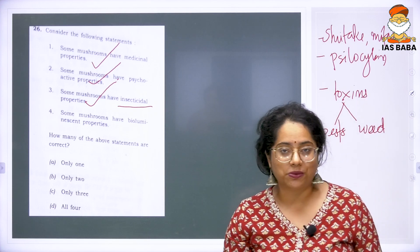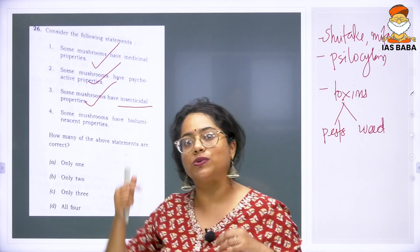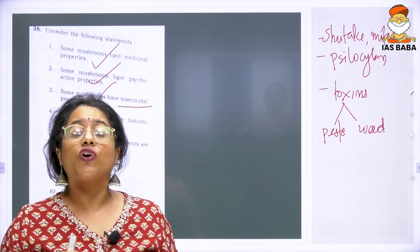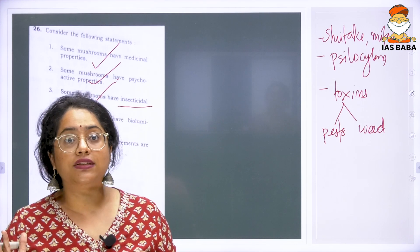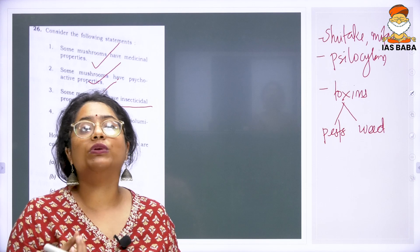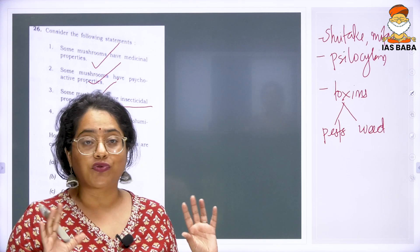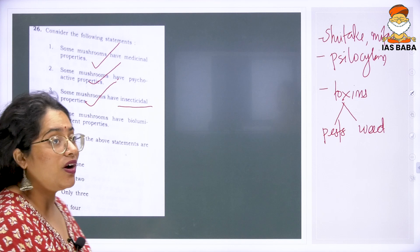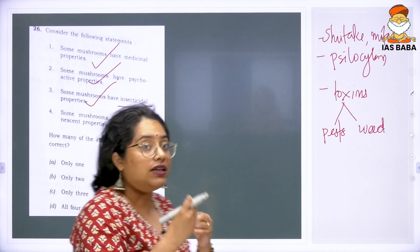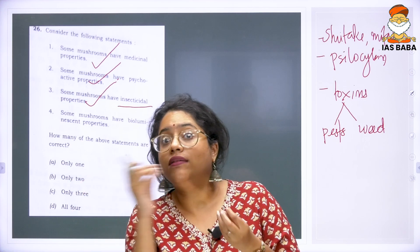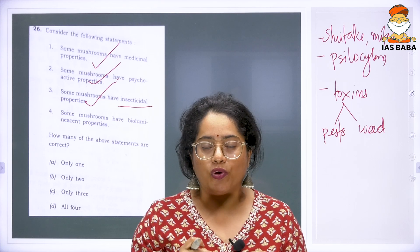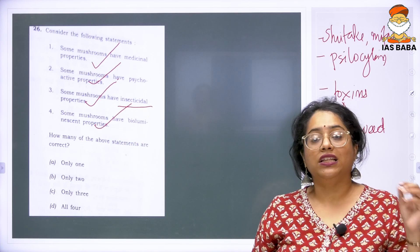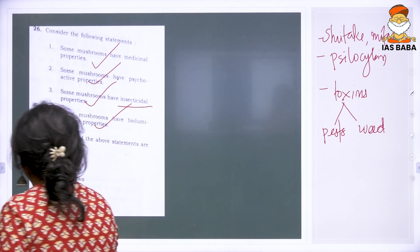Regarding bioluminescent properties — this statement was asked because that particular year there were many discoveries of bioluminescent mushrooms in the northeastern part of India. You don't need to know their scientific names, but you do need to understand that bioluminescent means emitting a certain kind of light when there is a stimulus. So yes, some mushrooms have bioluminescent properties. The answer to this question is all four statements are correct.